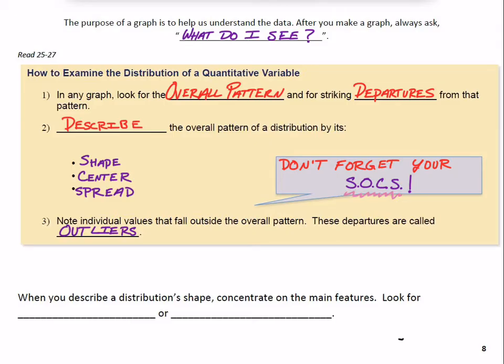If they're not there, we don't have to note them, but otherwise, if there are any outliers, we should mention them when we're describing the overall pattern of the distribution. We say, don't forget your socks. That's our acronym for describing a dot plot or a distribution like that. Shape, outliers, center, spread.